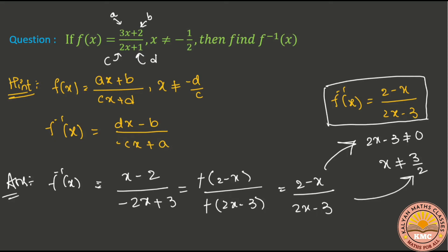Let me explain the shortcut. For a function in the format (ax + b) / (cx + d), to find f inverse quickly: the a value and d value interchange. So a goes to d's place and d goes to a's place. Next, b value and c value will have their signs changed — plus becomes minus, minus becomes plus.